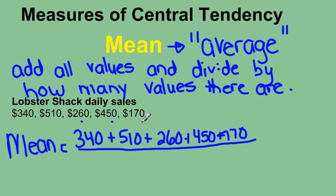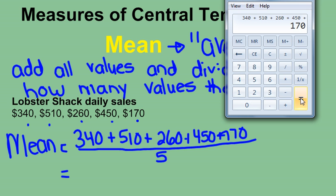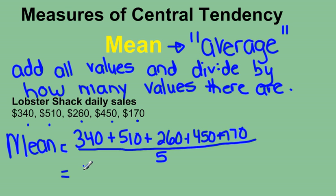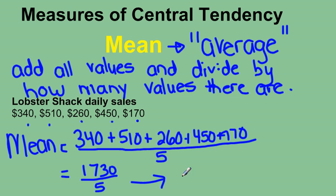So we're going to divide by five. If I add up all these numbers in my calculator — 340 plus 510 plus 260 plus 450 plus 170 — that equals 1730. And then I divide that by five and get 346. So our mean, or average daily sales, is $346.